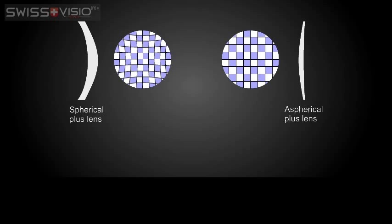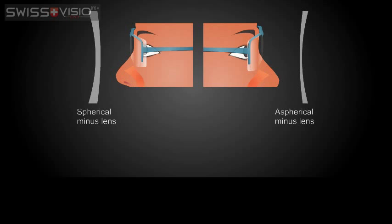A slight drawback for aspherical lenses is the fact that these create a slight distortion in the outer peripheral area of the lens for the wearer. Aspherical lenses are an excellent upgrade for higher prescriptions.